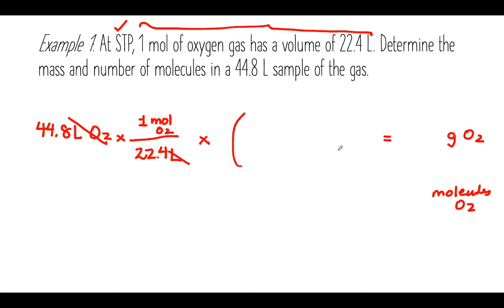Now how do we go from moles of oxygen gas to grams of oxygen gas? We can use our molar mass. So I know that for one mole of oxygen gas, there are 32 grams of oxygen gas.